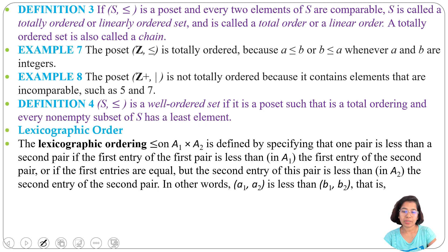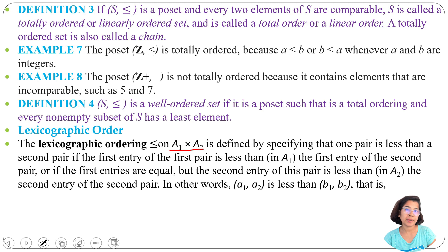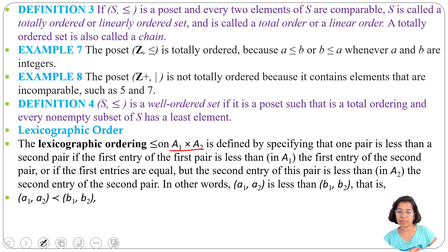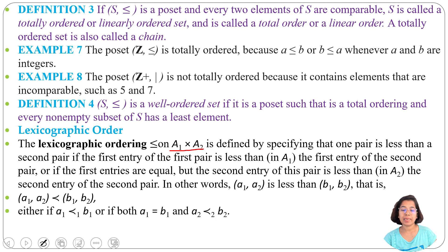The lexicographic ordering on A1 × A2 is defined by specifying that one pair is less than a second pair if the first entry of the first pair is less than the first entry of the second pair, or if the first entries are equal, then the second element of the first pair must be less than the second element of the second pair. In short: (A1, A2) < (B1, B2) if either A1 < B1, or A1 = B1 and A2 < B2.